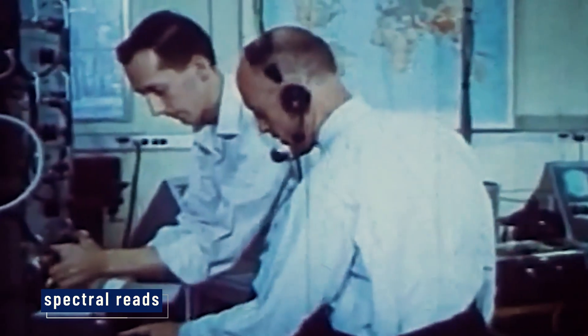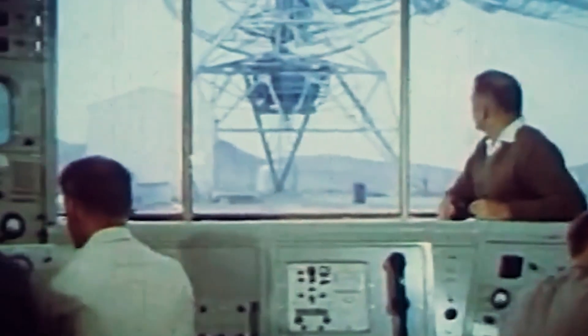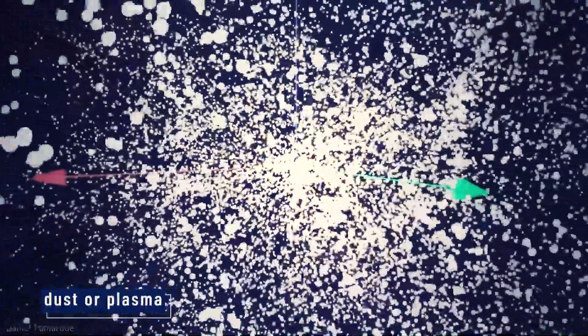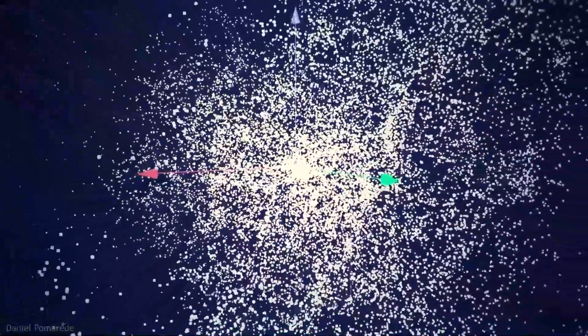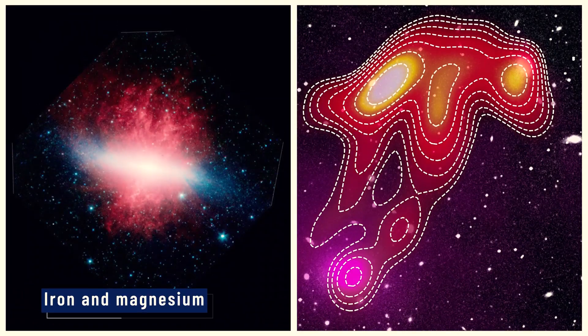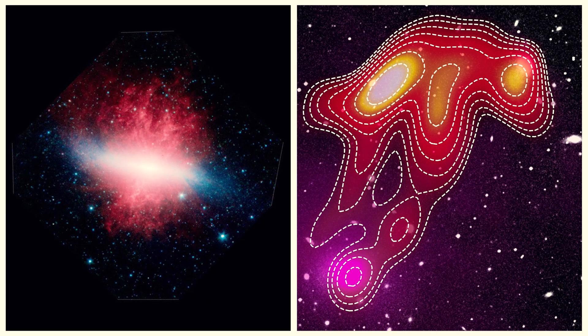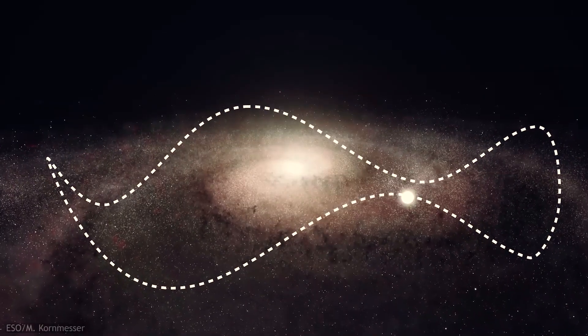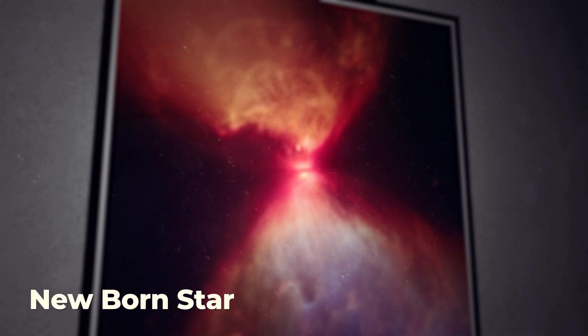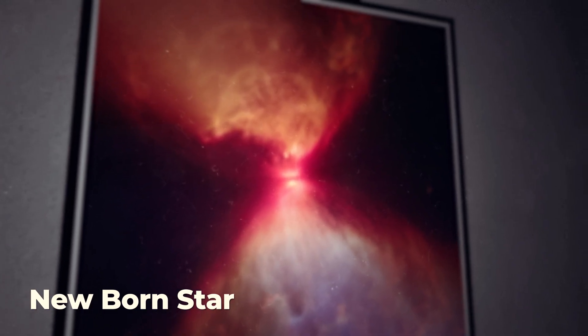Teams poured over the spectral reads, trying to make sense of the signal. Unlike typical starlight, which blazes with hydrogen and helium, this object glowed with the warmth of dust or plasma, laced with unusual metal ion emission lines. Iron and magnesium, yes, but at temperatures that defied easy explanation. It wasn't cold enough to be dead interstellar dust, and it wasn't hot enough to be a newborn star.